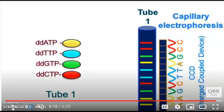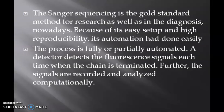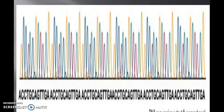These capillaries are further equipped with charge-coupled device or CCD for the detection of fluorescence signals. The chain termination sequencing is the gold standard method for research as well as in diagnosis. Because of its easy setup and high reproducibility, its automation had been done easily. The process is fully or partially automated. A detector detects the fluorescent signals each time when the chain is terminated. Further, the signals are recorded and analyzed computationally. The computational software generates various fluorescent peaks depending upon the amount of fluorescence emitted.